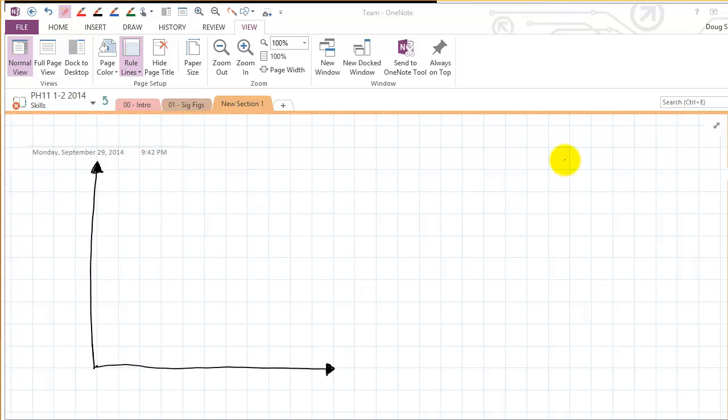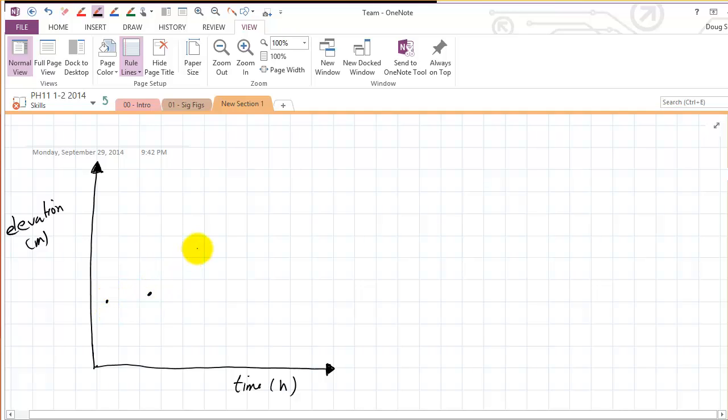Maybe we'll do say elevation in meters and time in hours. So elevation is height, like if you're going up hiking, the higher you walk, the more elevation you gain. So let's suppose you collect some data, something like this.